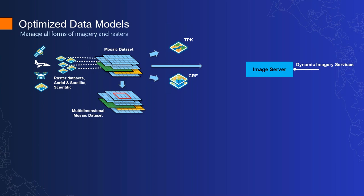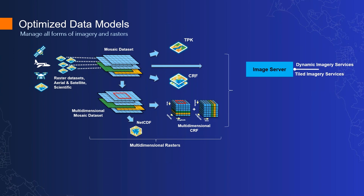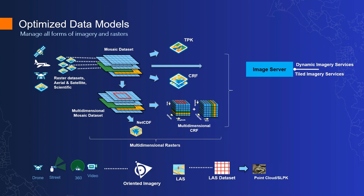The Mosaic Dataset also supports multidimensional data — you can load scientific data with multiple dimensions and variables, reference them within the Mosaic Dataset, and provide access through multidimensional rasters, allowing access to any slice or parameter. You can also export to net CDF file, or to a multidimensional CRF, which is a data cube optimized for storage in cloud storage and enables rapid access to profiles within the data sets. We also have other data models, including oriented imagery and LAS data sets designed to support point clouds and LiDAR data.